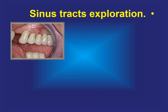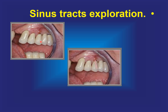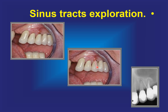Sinus tract exploration: when we have a fistula on top of a tooth, we place a gutta-percha cone and see where the cone leads us. This reveals the true source of the inflammation. As we can see in the radiograph, the gutta-percha cone shows us that the adjacent tooth is the cause — it is the maxillary first premolar, not the maxillary second premolar.